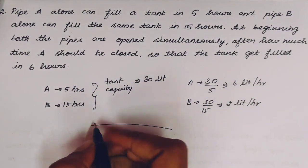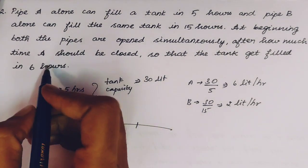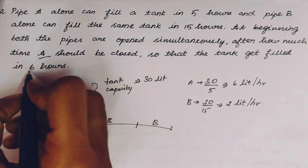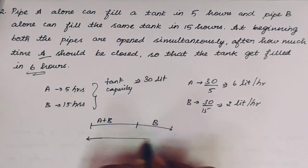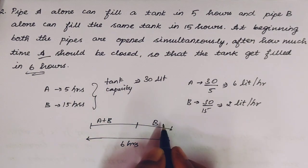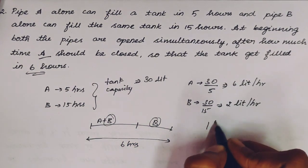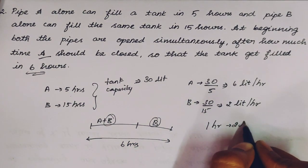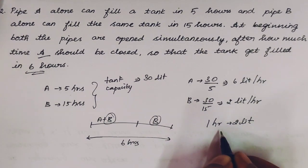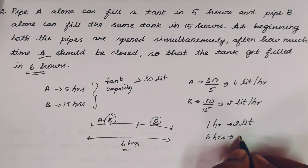Starting from the beginning, both A and B are open. After a certain time, A is closed and remaining is filled by B alone. Total time is 6 hours. Since B runs for the entire 6 hours and fills 2 liters per hour, B fills 6 into 2 equals 12 liters total.